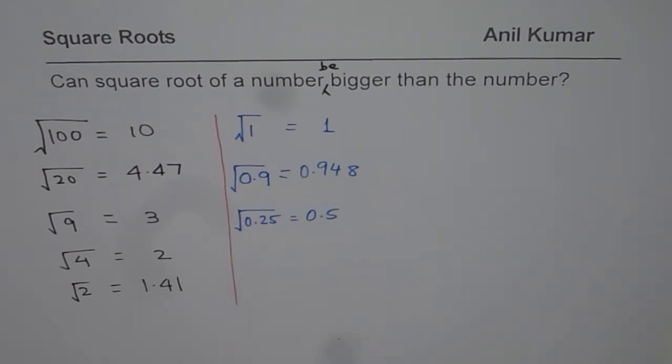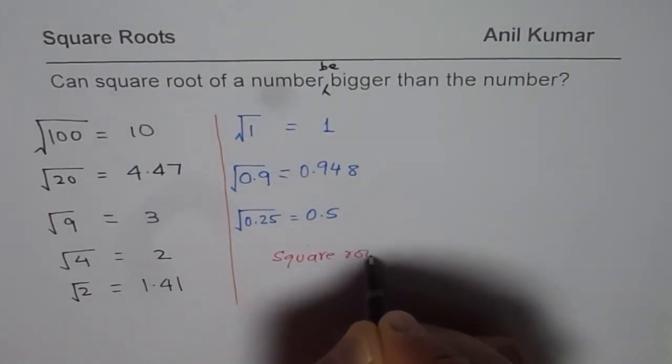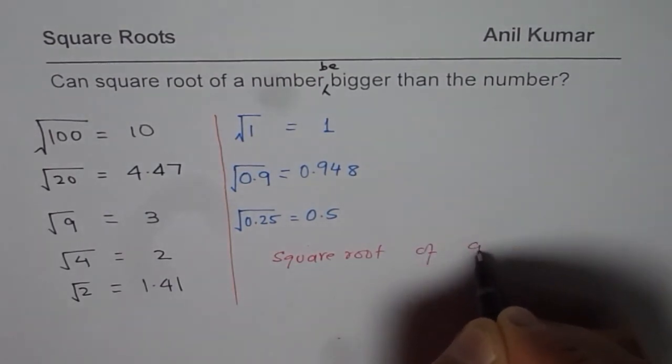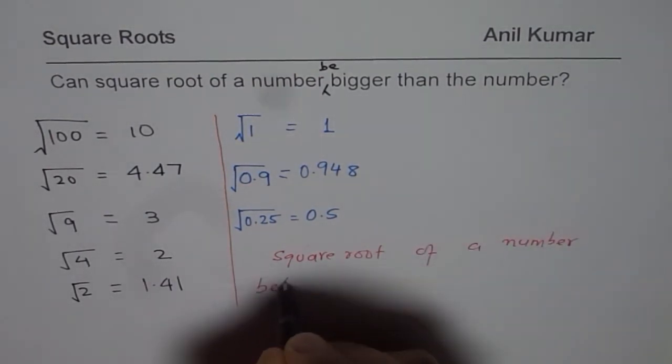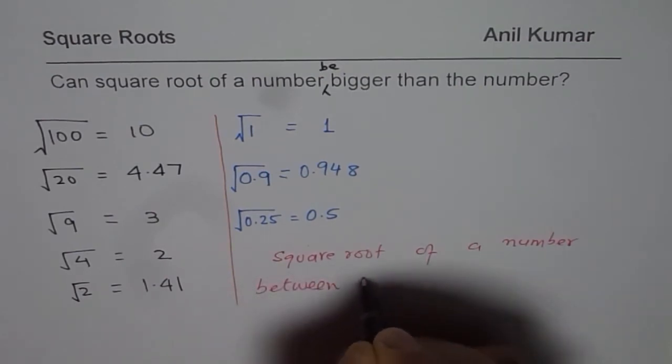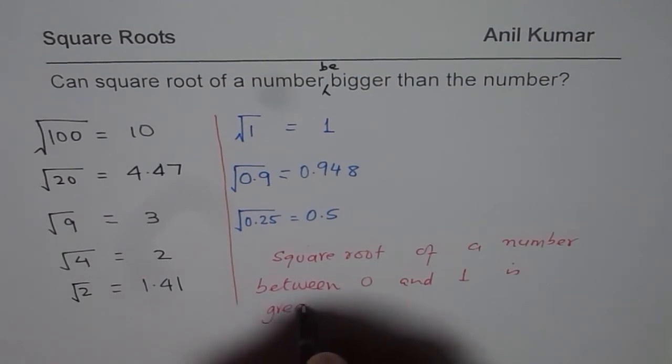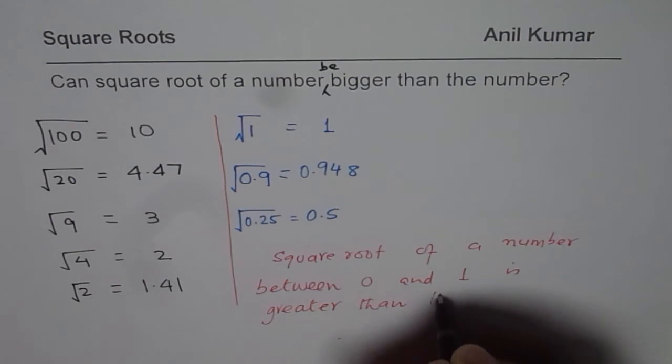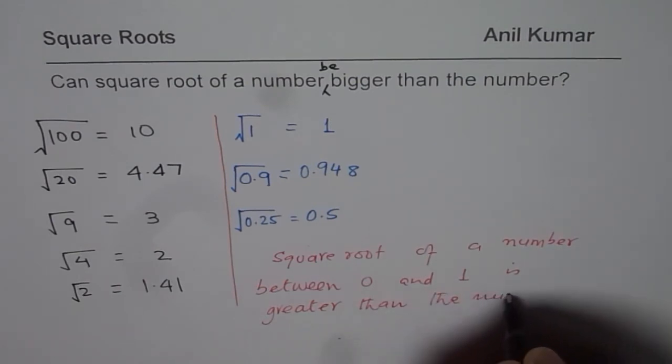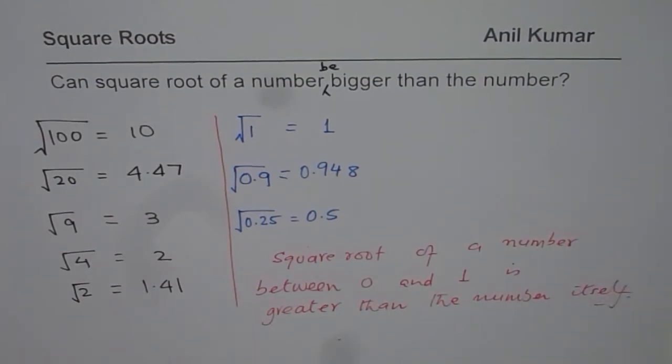You see that the square root of a number is greater than the number, right? So we can conclude that square root of a number between 0 and 1 is greater than the number itself. Do you see that? So that is how you can calculate.